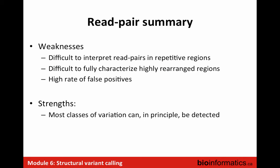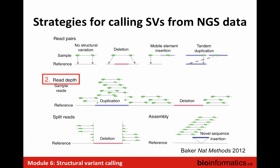In summary of read pair approaches: it's challenging when you've got repetitive regions, because those lead to weird pairs since you don't know where to map them. It's harder to interpret structural variants when regions are not unique because of mapping ambiguity. When the genome is highly rearranged, it's hard to untangle what's going on. All of these tools tend to have high rates of false positives due to repetitive regions and complex rearrangements. But in theory, you can detect almost anything with these approaches — it's still a valuable strategy despite the false positives.